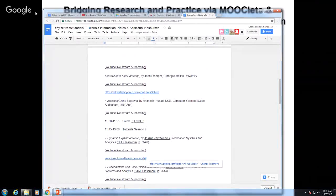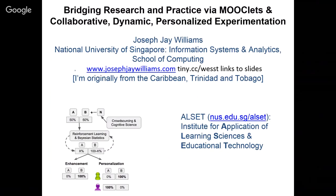The theme of what I'm going to be talking about is how do we bring together research — psychologists doing research, education people doing research that they normally publish — with actual practice. How do we improve outcomes and learning for students? How do we help faculty teach better? My approach is really about trying to rethink experimentation to be collaborative, dynamic, and personalized.